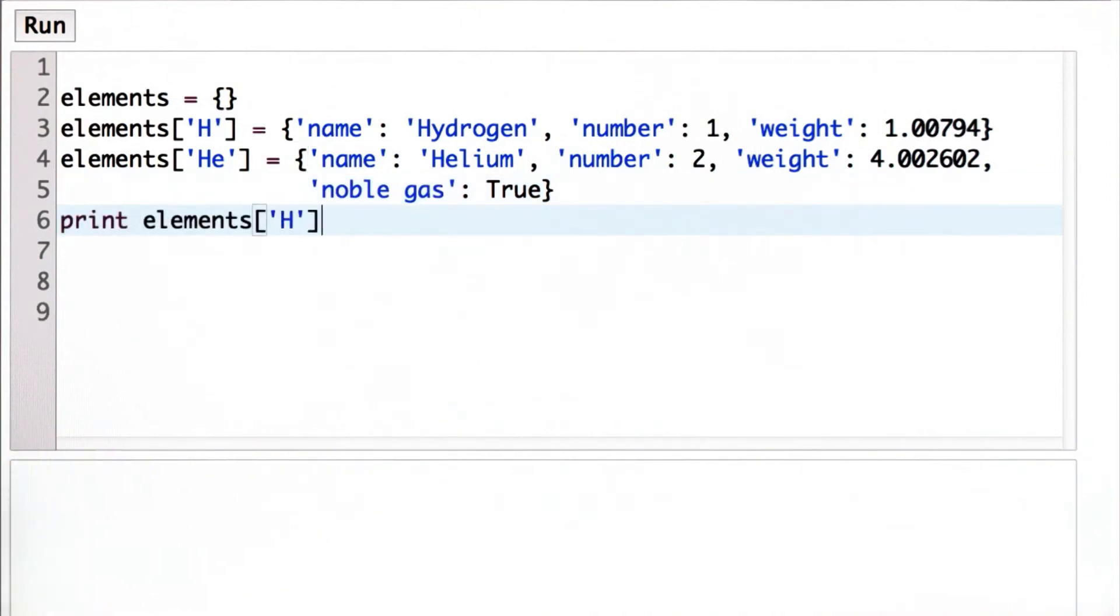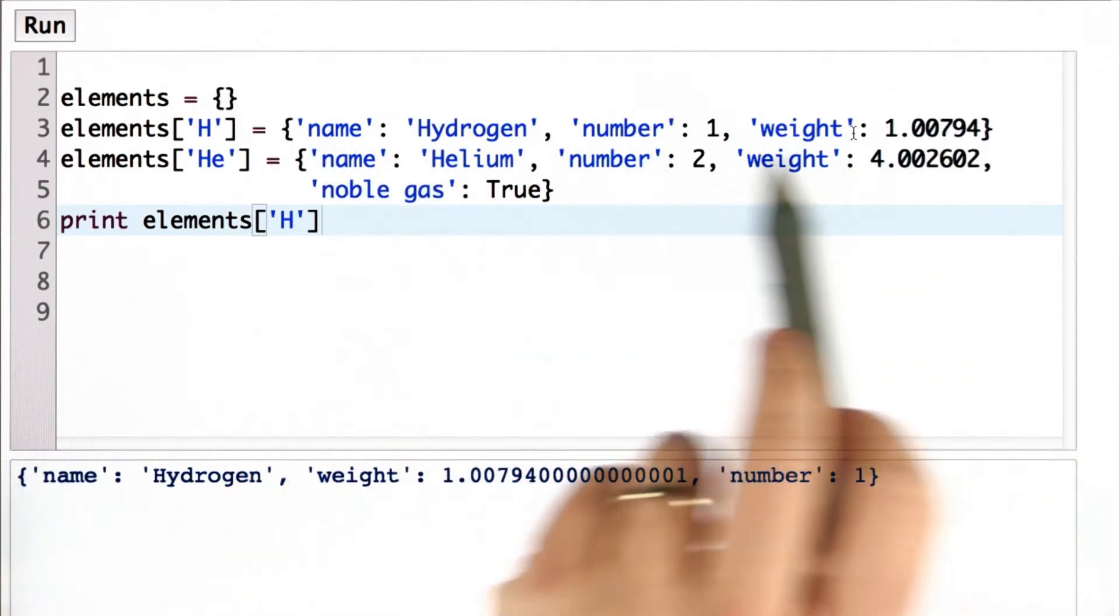So now, we can look up the element h. We'll see its entry. Again, note that it's a dictionary. So the order is not the same as the order that we used here.